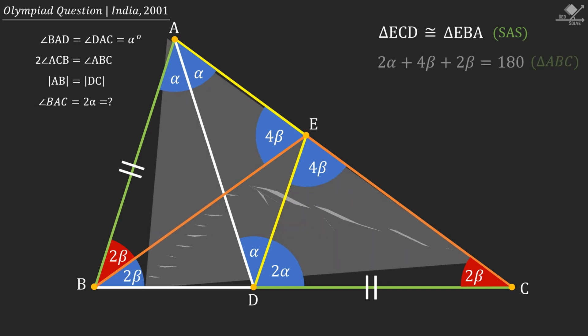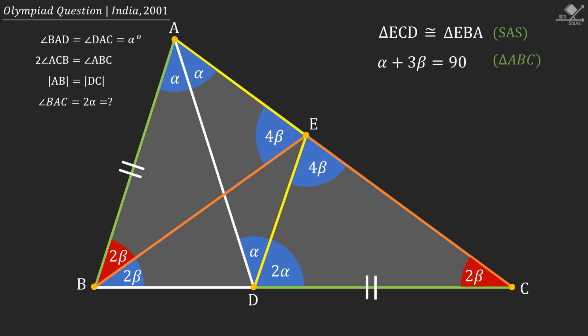Now, from triangle ABC, we can write 2α + 4β + 2β = 180. And that will simplify to α + 3β = 90.